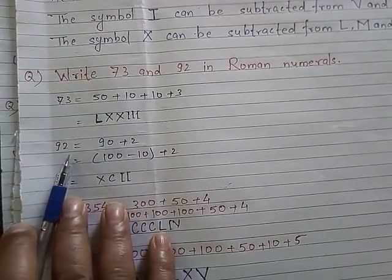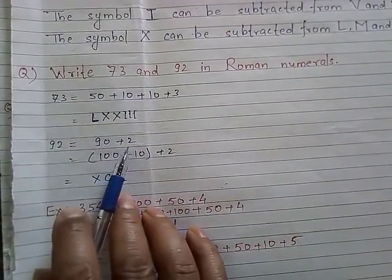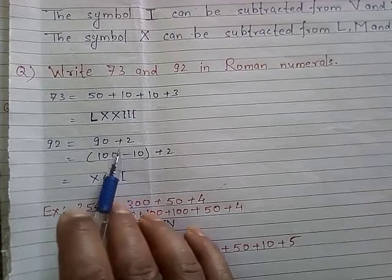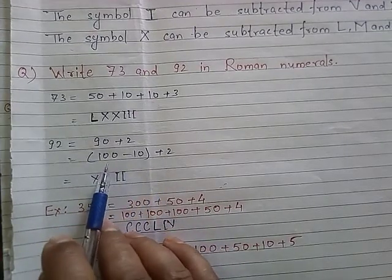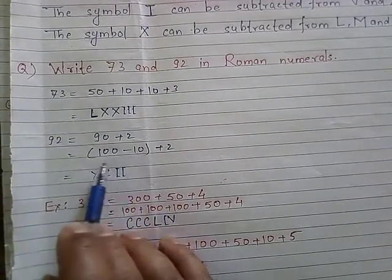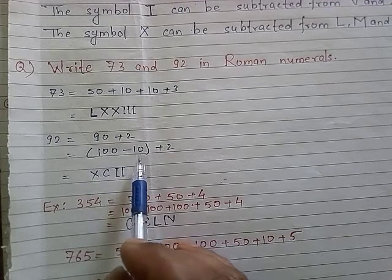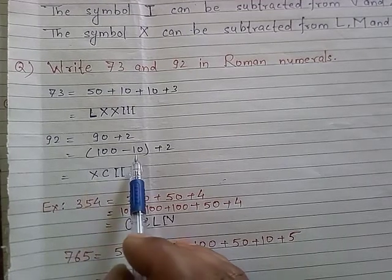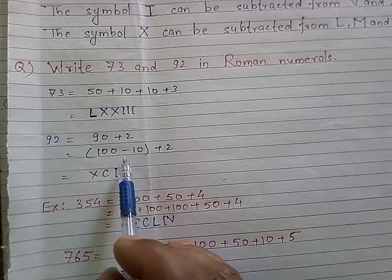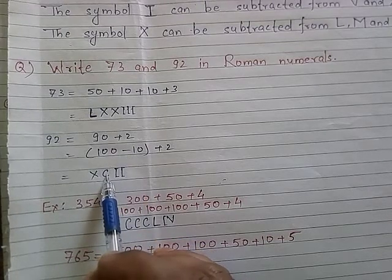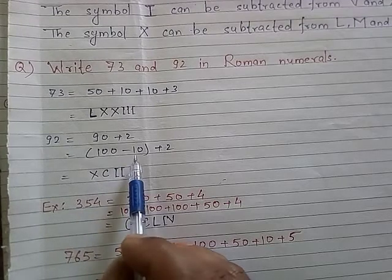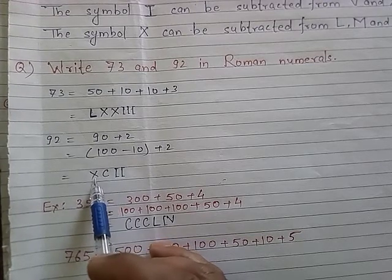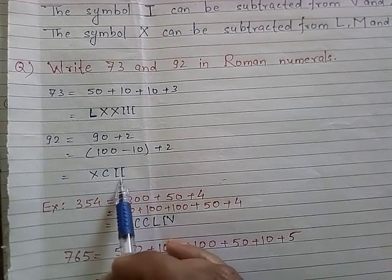Now, 92 in Roman numerals. We write 92 as 90 plus 2. Then we break 90 as 100 minus 10, which gives XC. And 2 is written as II. So the symbol of 10 (X) is placed to the left of the symbol of 100 (C), giving XC, and we add II. So 92 is written as XCII.